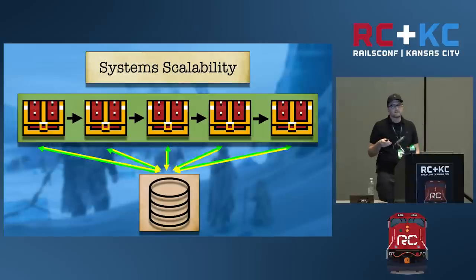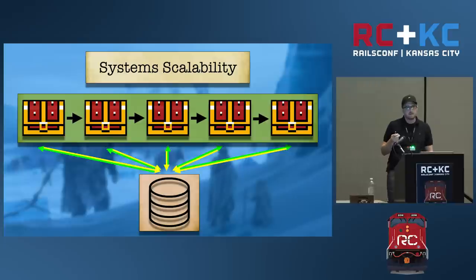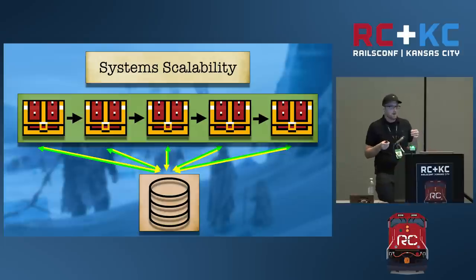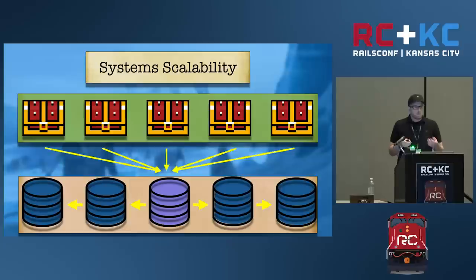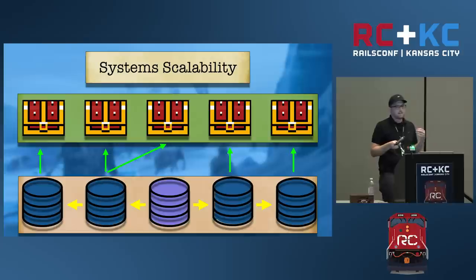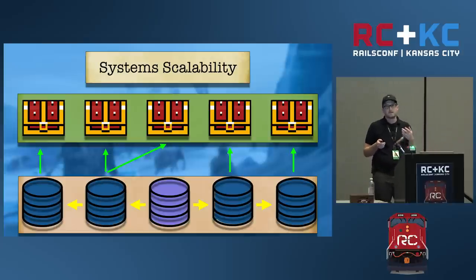But at some point, we're going to reach the limitations of our database. I've personally seen the largest RDS instance you can get on AWS at 100% CPU, and when it happens, it is not a good thing. You can't scale out the database, at least in the relational world, the same way you would with your app servers, because you need a single source of truth. But what you can do is read replicas or sharding. With read replicas, you do all your writes to a primary database, which then replicates onto a secondary database, and then you do all your reads from the secondary, taking a portion of the load off the write server.